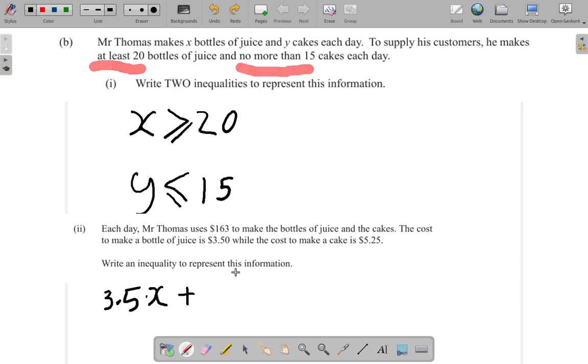Plus, now he spends more money to make the cake, $5.25 each. So it's 5.25 for one cake, you multiply this by one. For two cakes it's double that amount, it's two. For three cakes triple this amount, it's three, and so on. Now how much cake does he make? He makes Y cakes each day, so it's going to be 5.25 multiplied by Y.